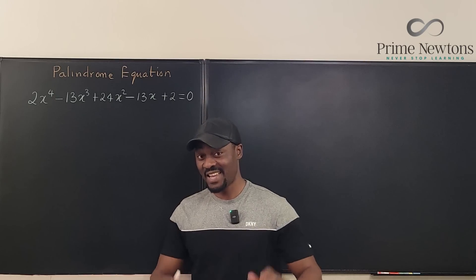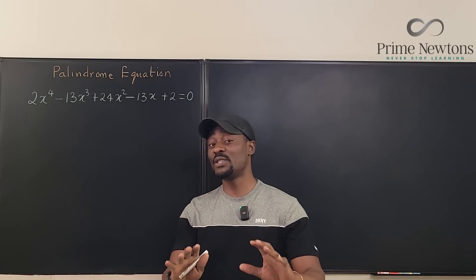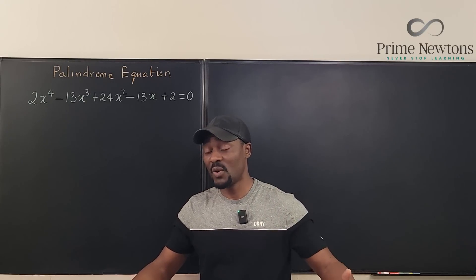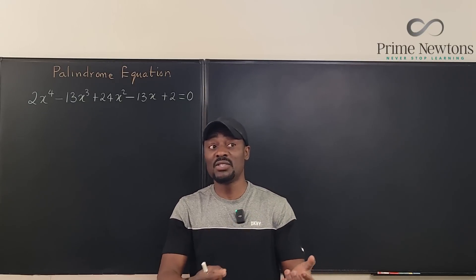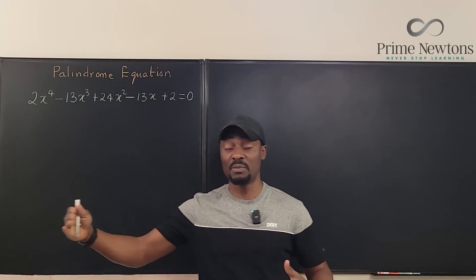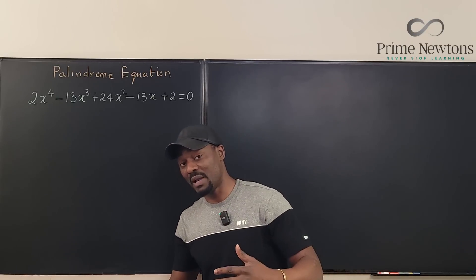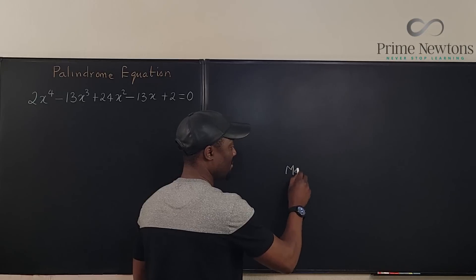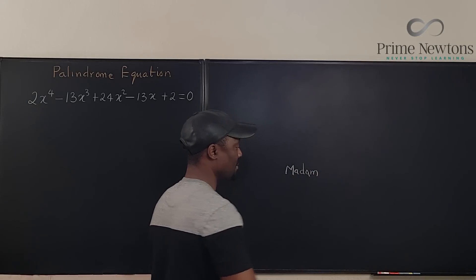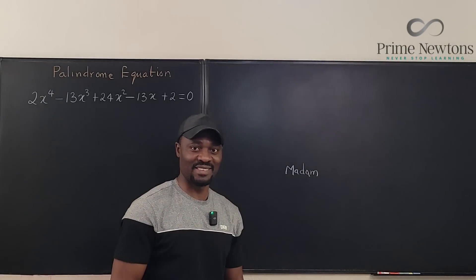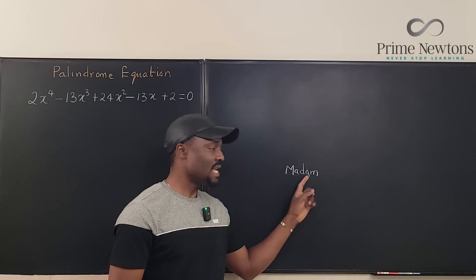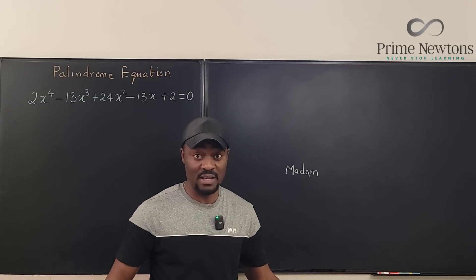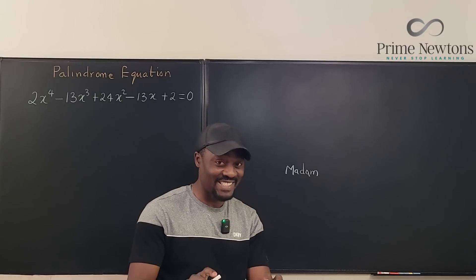Welcome to another video. You're going to see a way to solve what is called a palindrome equation. A palindrome is a way of describing a word that spells the same way from the right and from the left. For example, the word 'madam' — it's M-A-D-A-M and if you spell it from either side it is M-A-D-A-M. There are so many words like that.